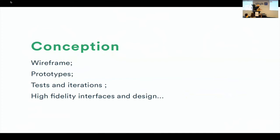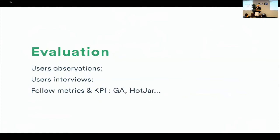You make the first iterations like wireframes, prototypes, tests, and iterations — and of course finally a high-fidelity interface. Evaluation is a very important step for me because you follow metrics and make user observations with your product or your MVP. It lets you know if you have made the right choices and continue to iterate. You use user observation, interviews, and you follow metrics with OKRs, Google Analytics, or other tools.